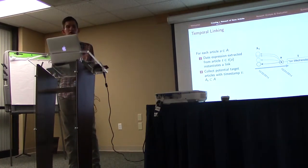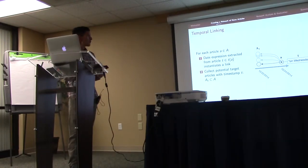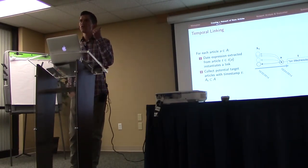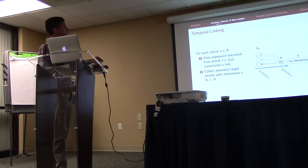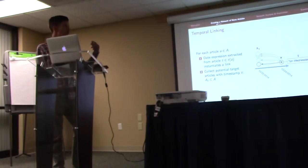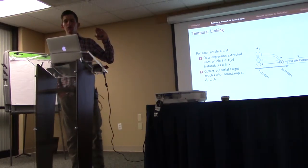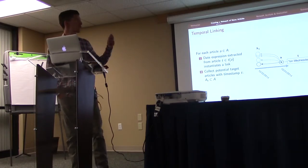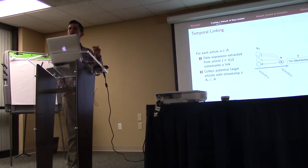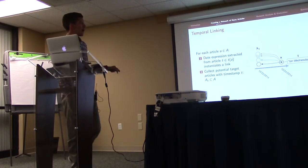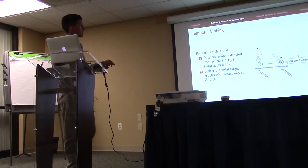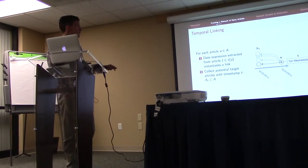Once we have all the articles preprocessed, we go through each article again chronologically and extract all date expressions occurring in the article. In this example, you can see article A with one explicit date expression — 'on Wednesday.' The advantage of the temporal tagger we're using is that it not only detects date expressions, but also tells us which date the expression actually refers to. So in this case, 'on Wednesday' refers to October the 22nd. All the articles are anchored on the timeline by their publishing date.